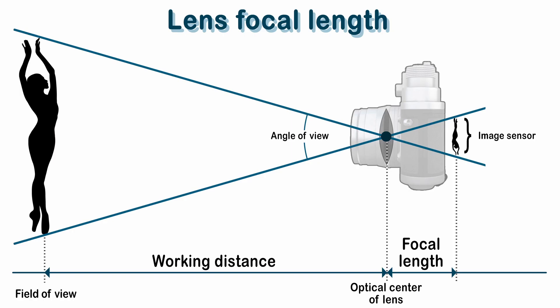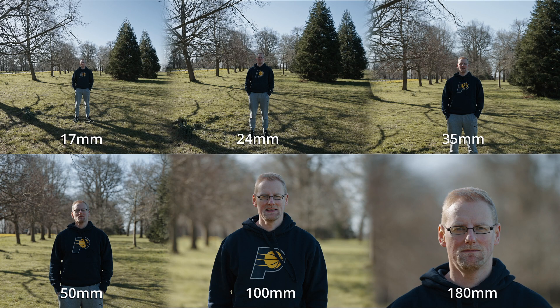Let's talk about focal length — what is it, and what focal length should you use depending on different situations? The focal length of a lens is the distance between the lens and the image sensor when the subject is in focus, usually stated in millimeters like 16, 20, 24, 35, and so on.